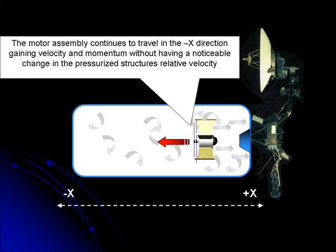The motor assembly continues to travel in the minus X direction, gaining velocity and momentum without having a noticeable change in the pressurized structure's relative velocity.